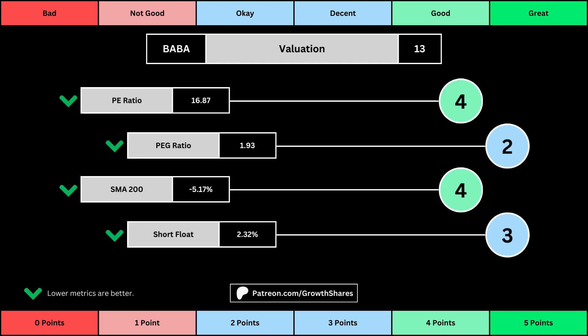This third set of metrics deals with the valuation of the company's stock based on its business. Think of the P/E ratio as a measure of speculation around the stock — we want it low. The PEG ratio adds earnings growth with the P/E ratio. Then, the 200-day simple moving average is the average stock price over that period; we want that low because it means we have a cheaper stock price. And short float is basically how bearish other investors think of the stock. For these four metrics, we want the values to be as low as possible, which will give us a higher point total within the bubbles.